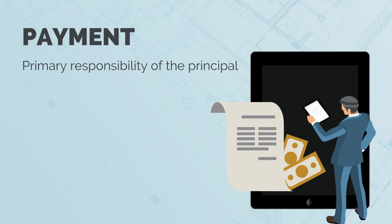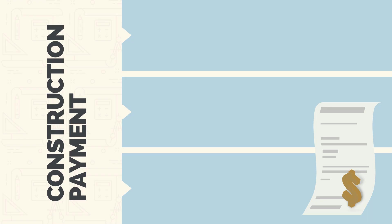In this section, we're going to talk about payment. There's a lot more to payment than you might think, and it's always a contentious issue on construction projects. Payment is one of the key responsibilities of the principal — they need to ensure they're paying the contractor for the works completed. Payment is always such an important issue when administrating any contract for a couple of reasons.